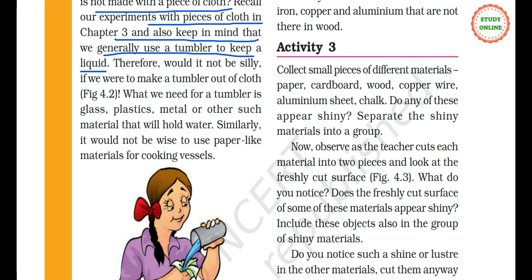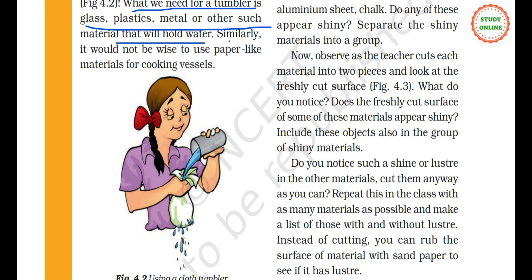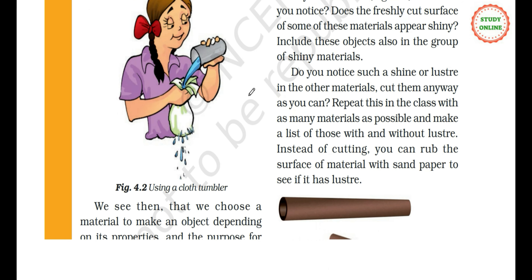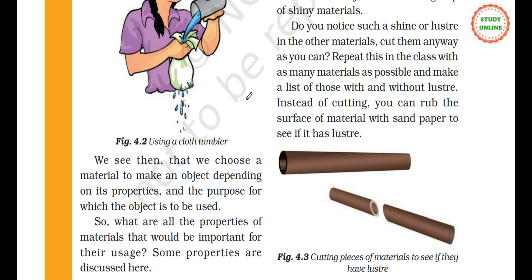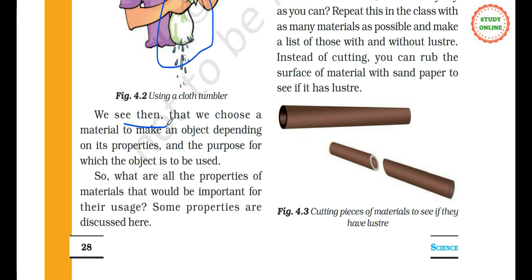Would it not be silly if we were to make a tumbler out of cloth? What we need for a tumbler is glass, plastic, metal or other such materials that will hold water. Similarly, it would not be wise to use paper-like materials for cooking vessels. We see then that we choose a material to make an object depending on its properties and the purpose for which the object is to be used.